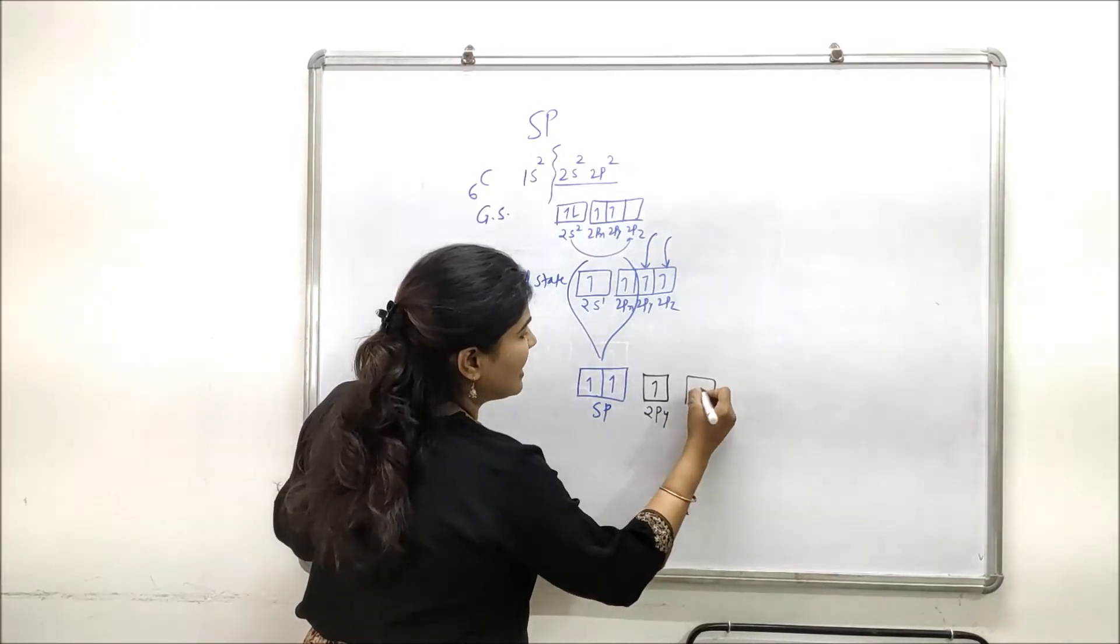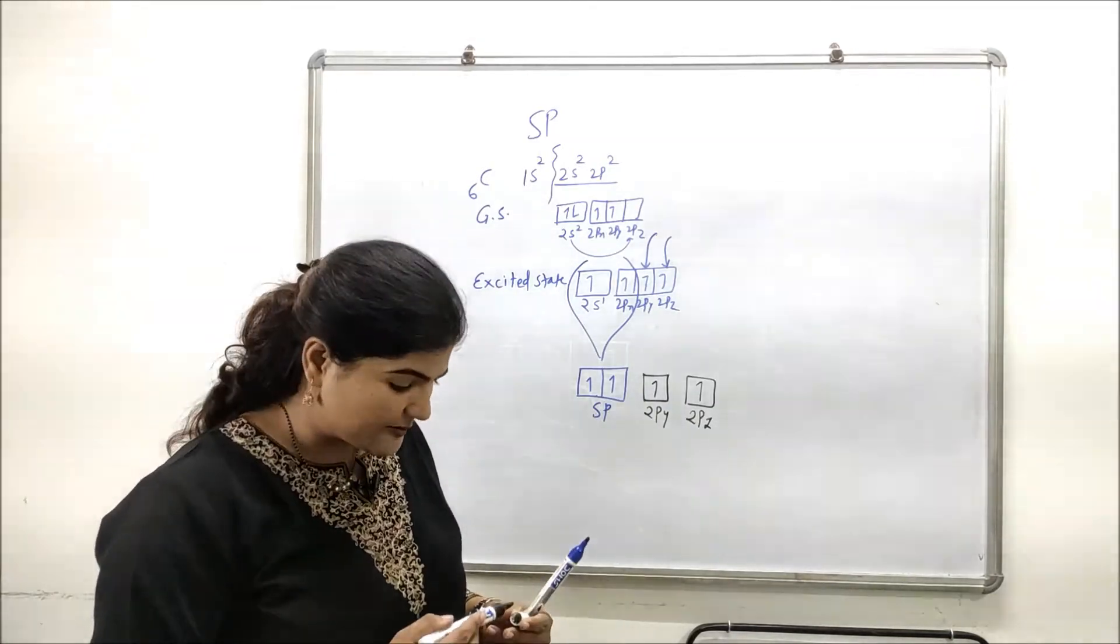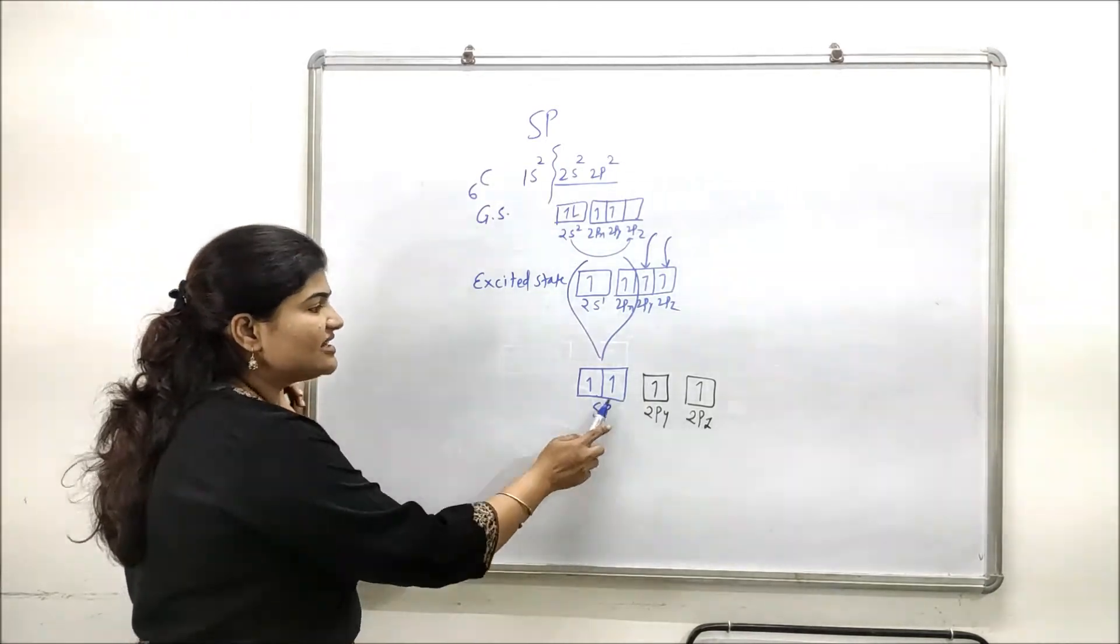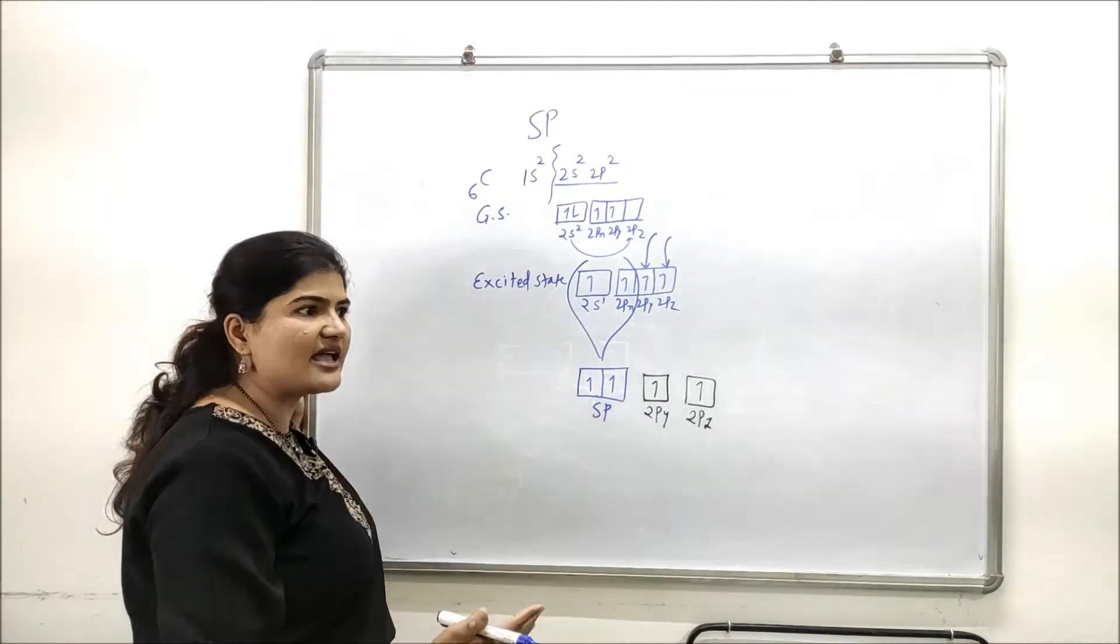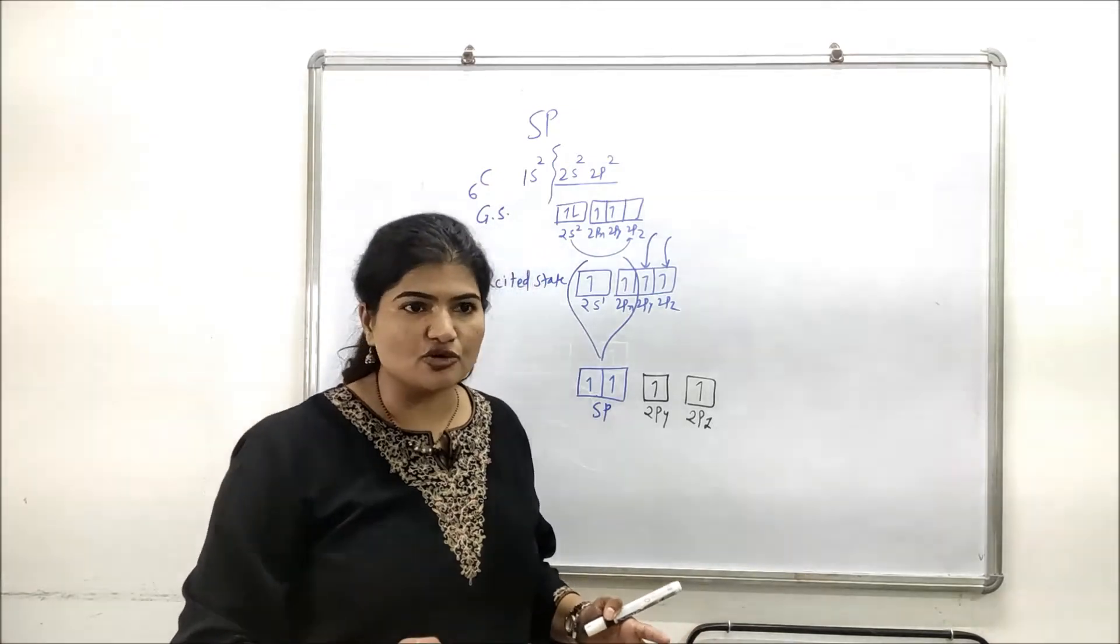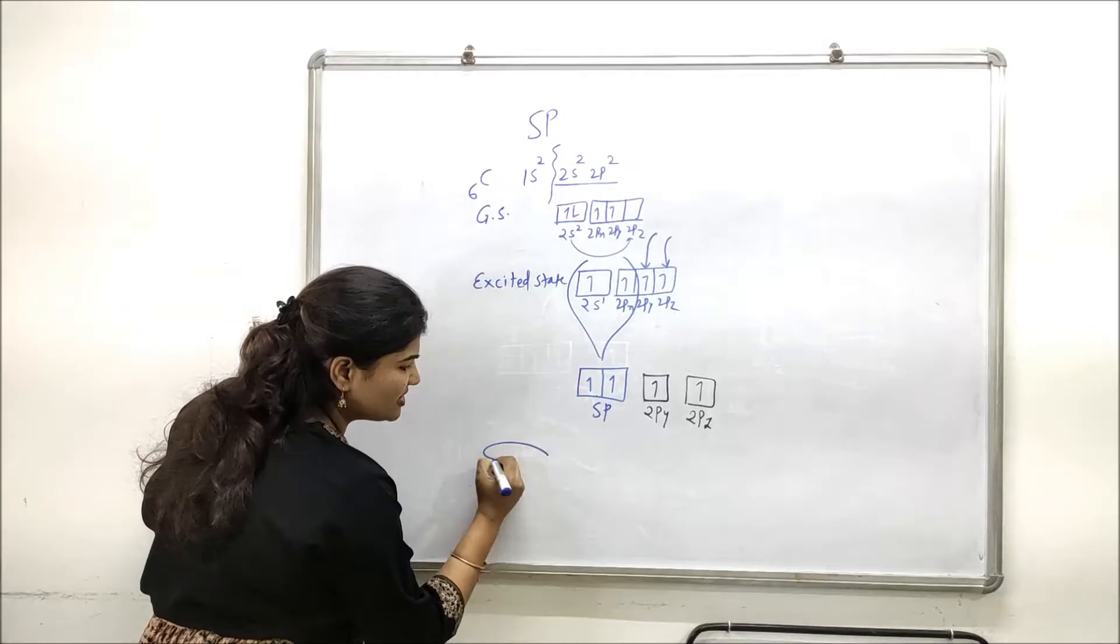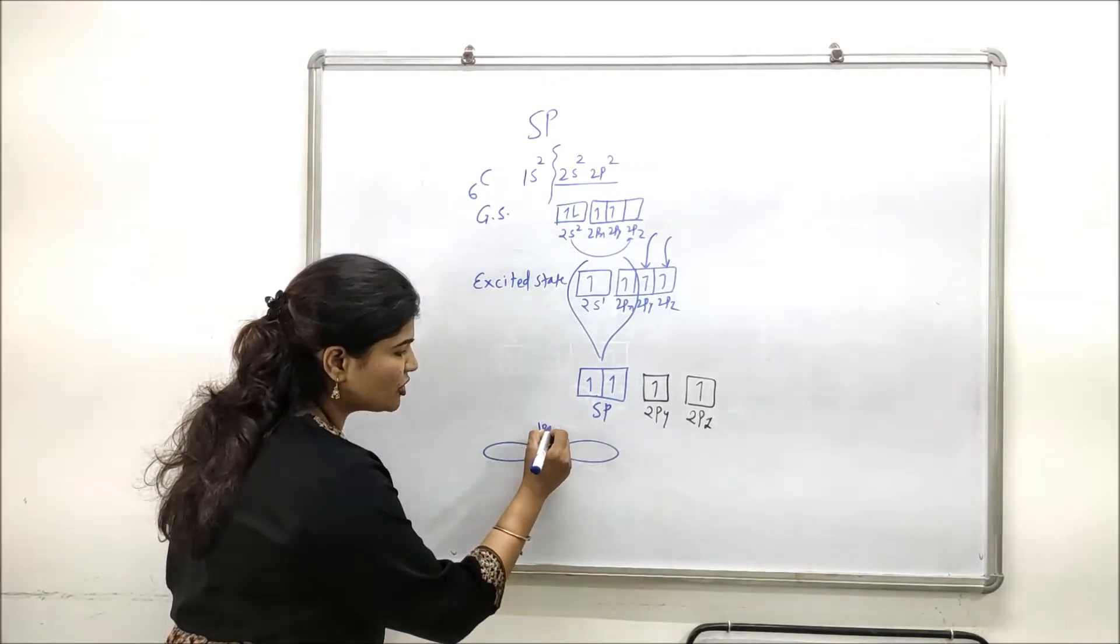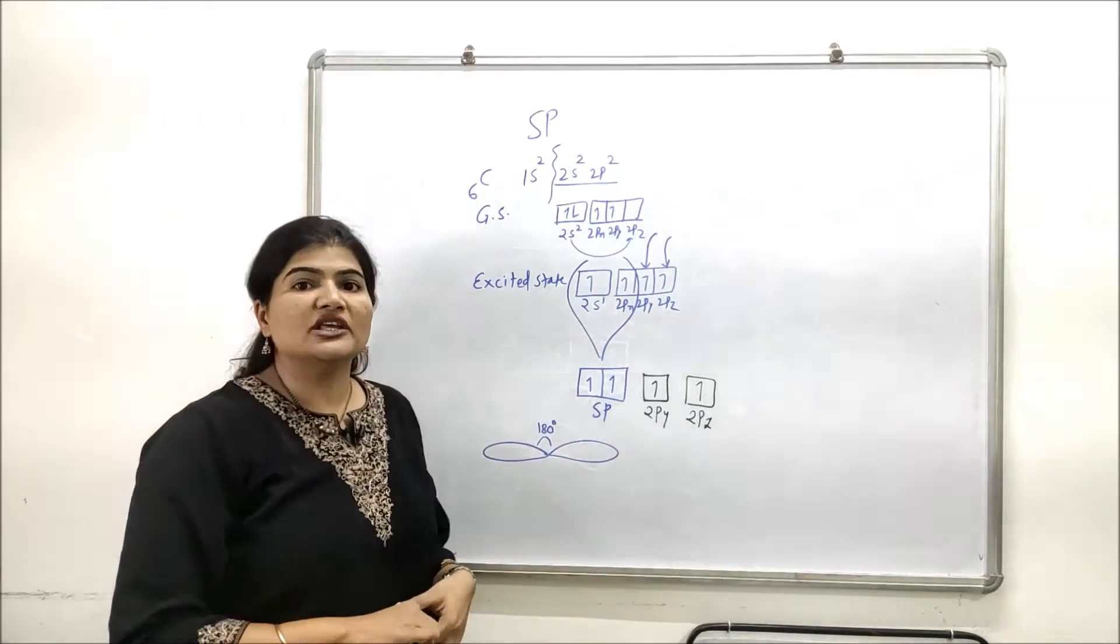How does the geometry of sp hybridized carbon look? As there are only two orbitals and each contains one unpaired electron, and as these hybrid orbitals try to acquire a shape with minimum repulsions between the lobes, for two lobes the basic arrangement which is possible is linear arrangement with 180 degree bond angle.